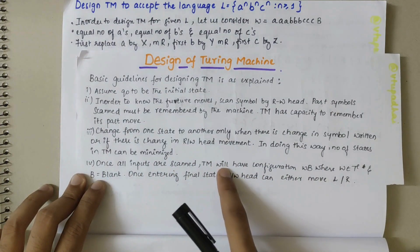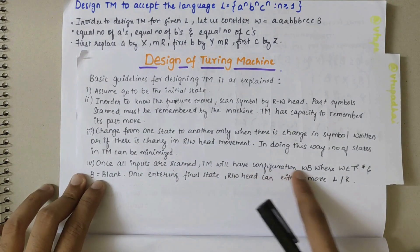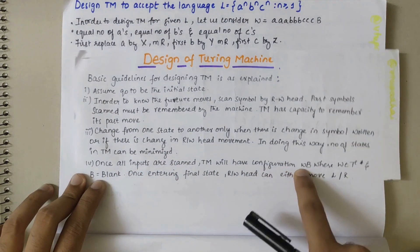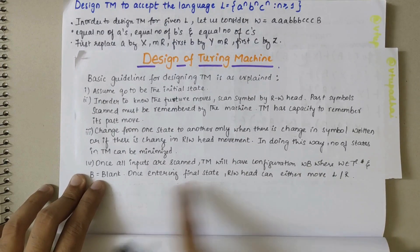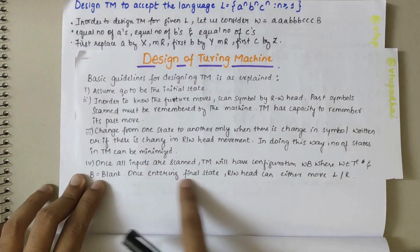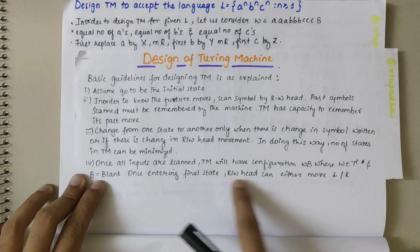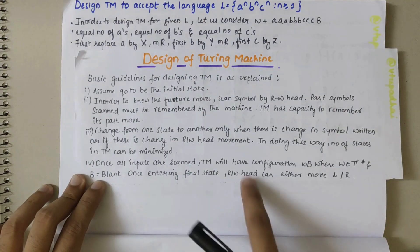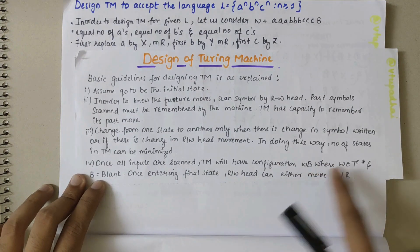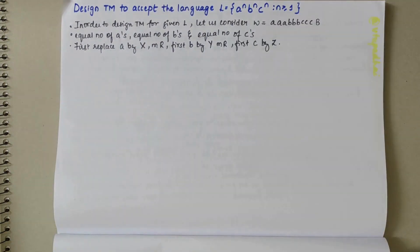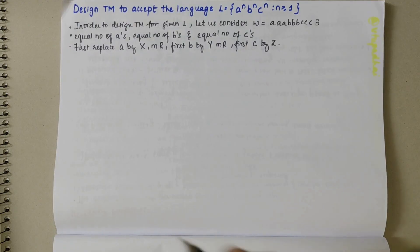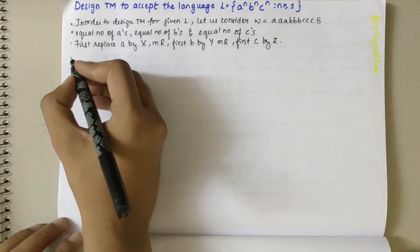Once all inputs are scanned, the Turing machine will have configuration w, B, where w is the string and B is the blank. Once entering the final state, the read-write head can either move left or right. Let's start now.